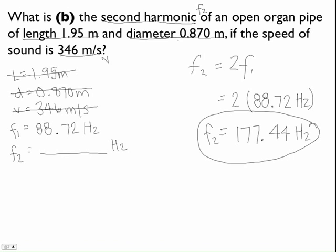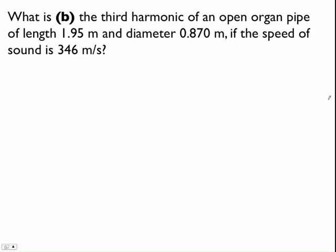So let's see part C. This should say C. And so part C says, what is the third harmonic of an open organ pipe? Again, they give us the length of 1.95 meters.